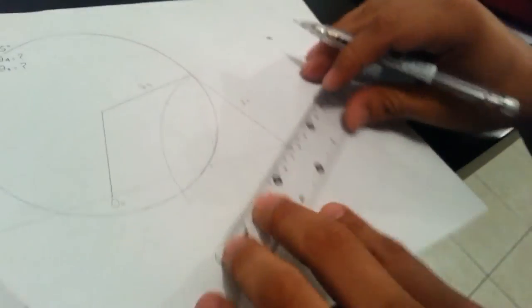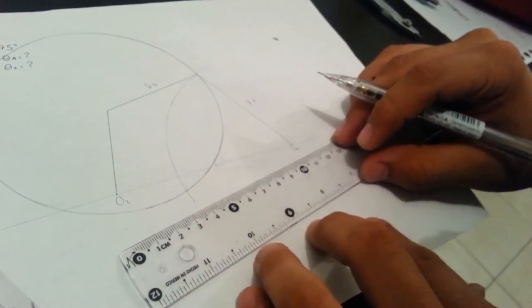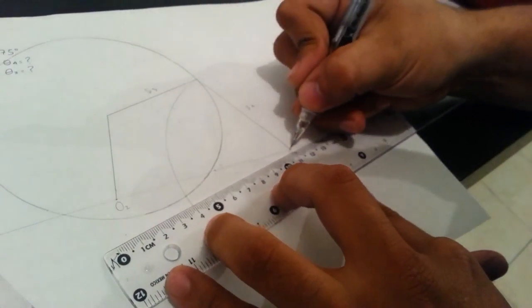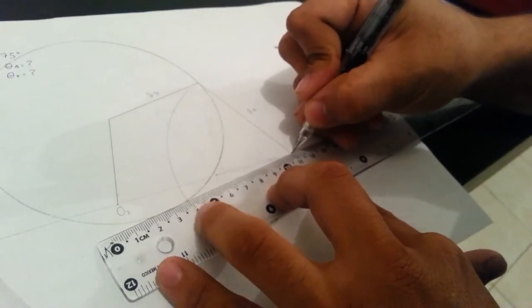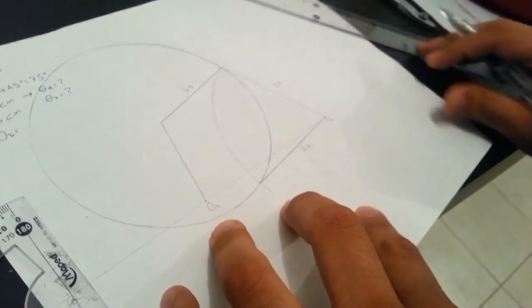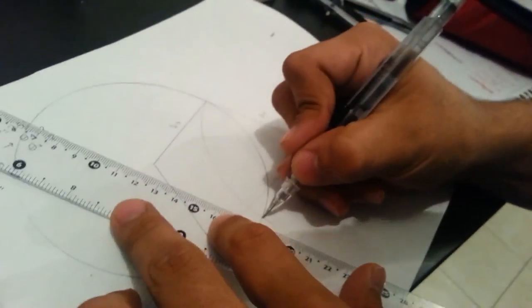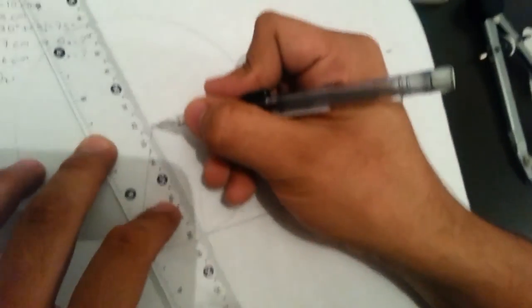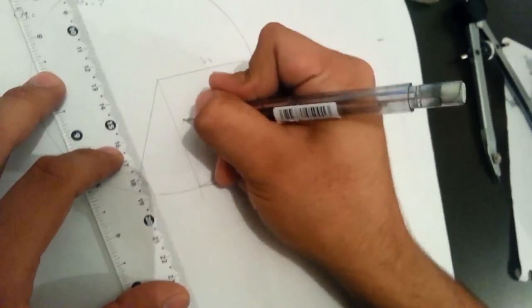But here you will see another intersection and you will see the other position. Here will be link 4, and here will be link 3.